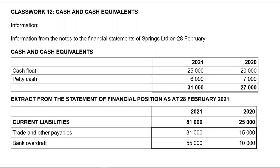On the 28th of February. When you look at the cash and cash equivalents note for 2020, you have 20,000 which is your cash flow, and petty cash which was 7,000 in 2020. 2020 is the previous financial year. The current financial year cash flow is 25,000 and petty cash is 6,000.